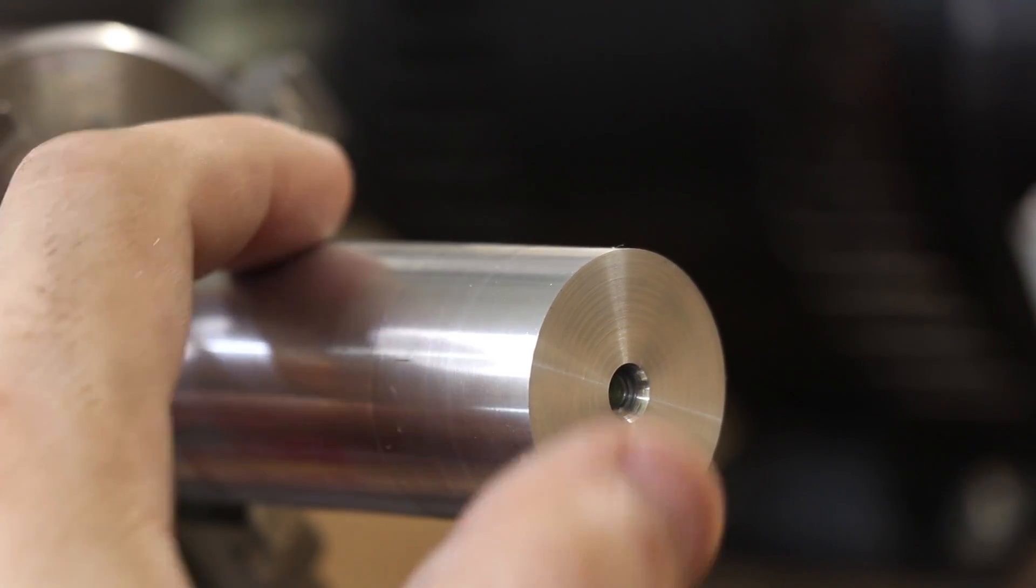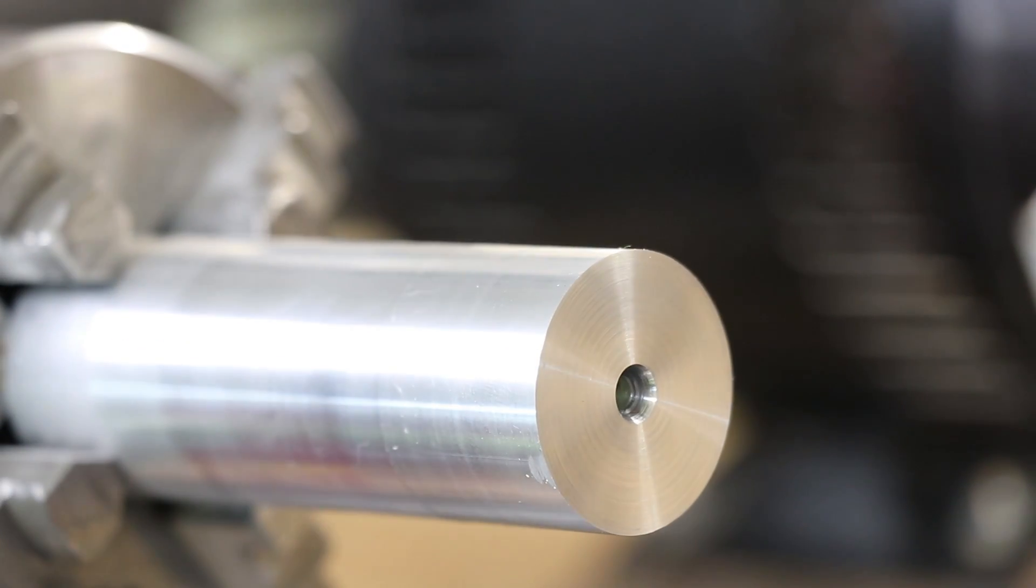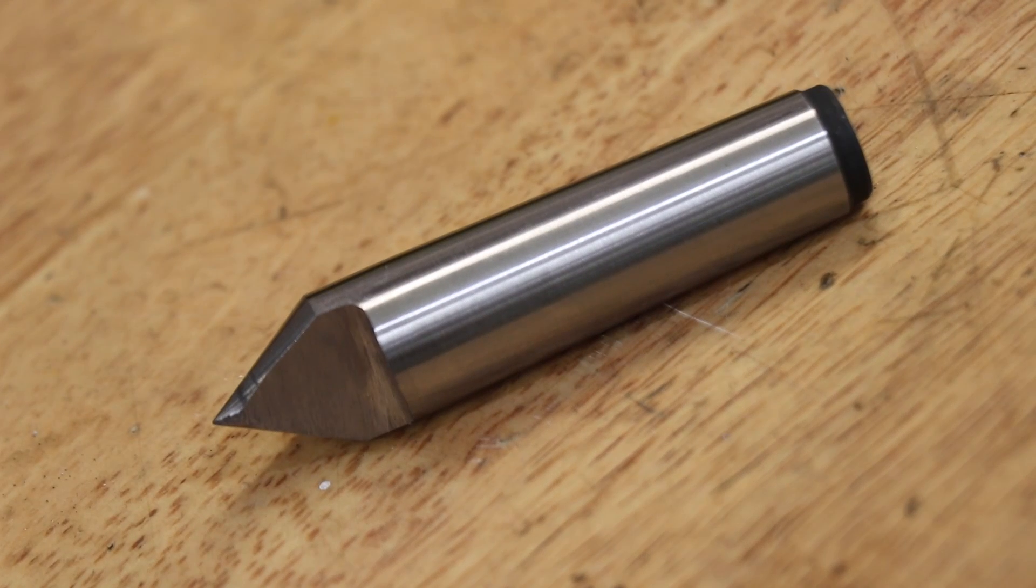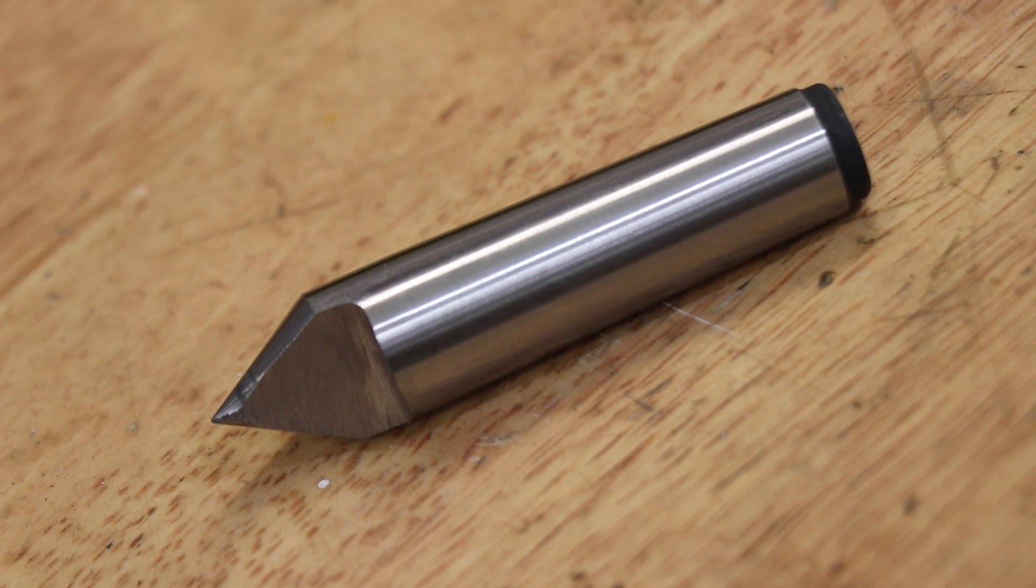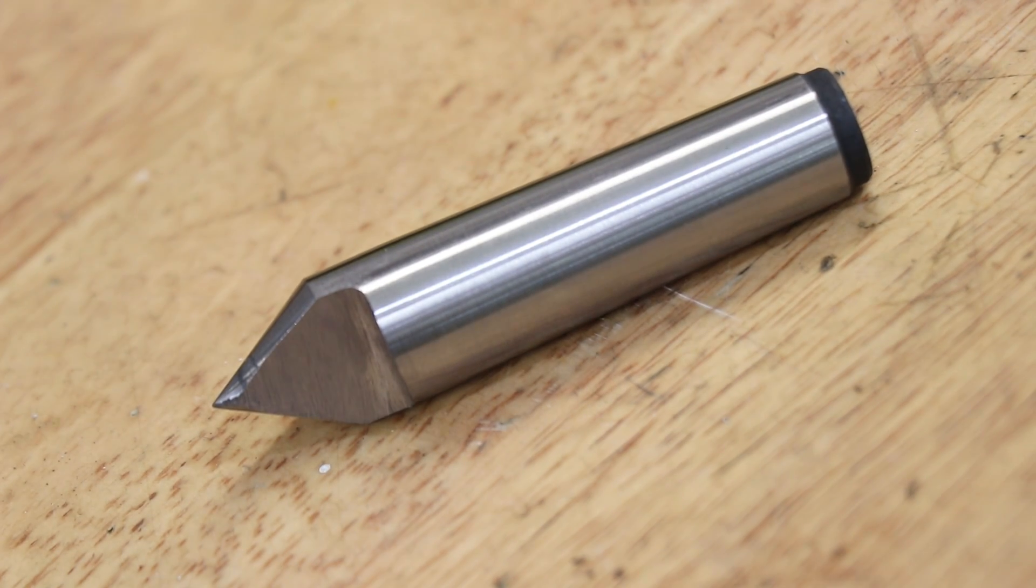And you know what? That's actually pretty decent. The result is a lot better than I would have gotten if I just faced the part without the tailstock. Overall, for five minutes at the grinder, machining a tool that I never use into a tool that I'm probably going to use more often, I'm decently impressed.